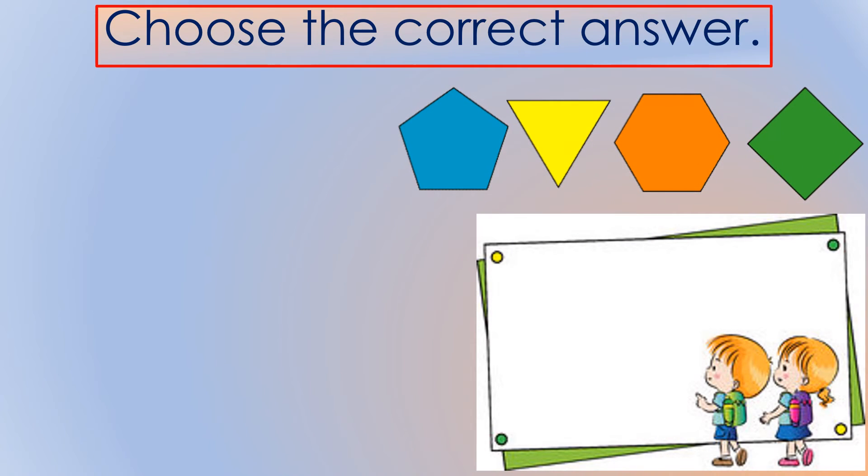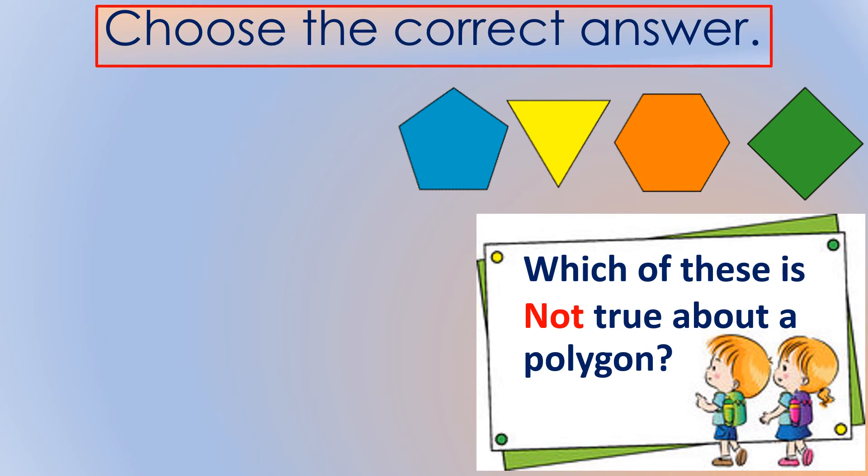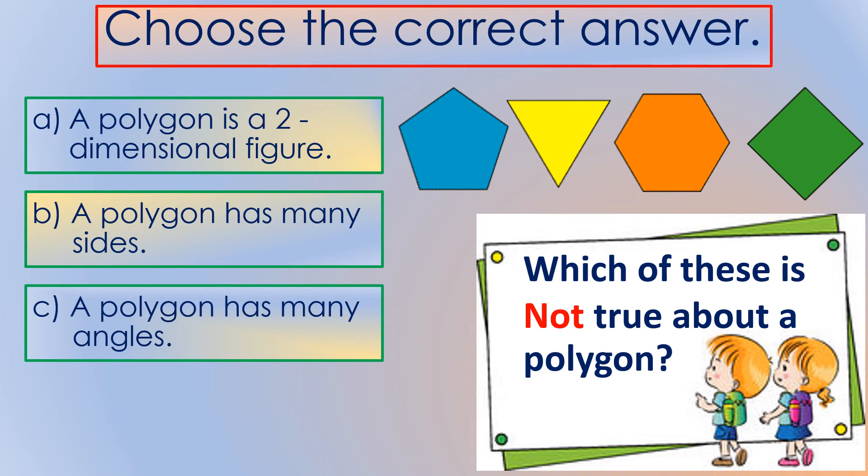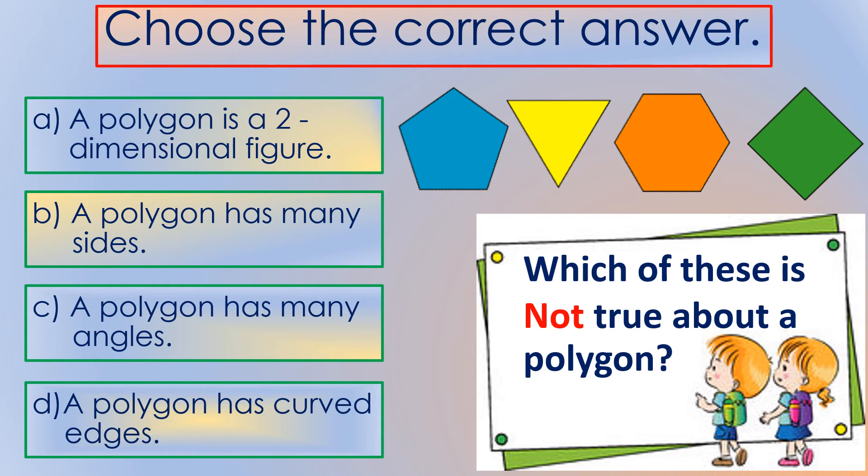Here is the next question. Which of these is not true about a polygon? A, a polygon is a two-dimensional figure. The correct answer for this question is letter D, a polygon has curved edges.